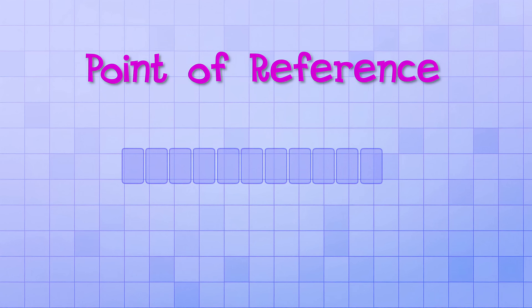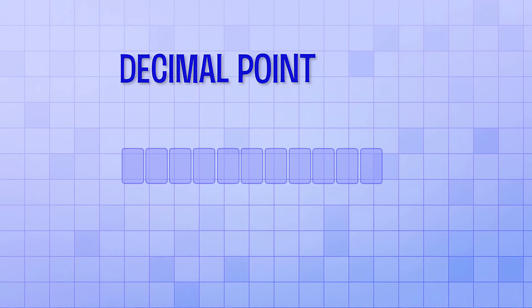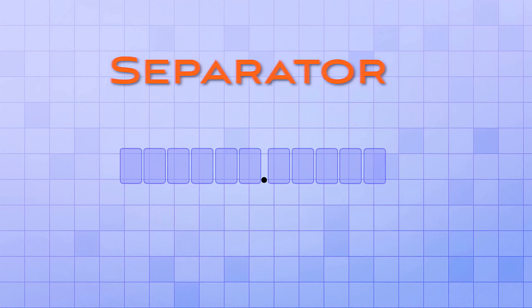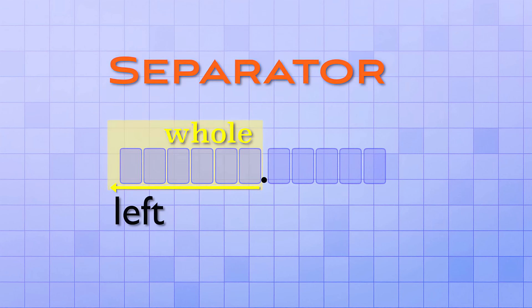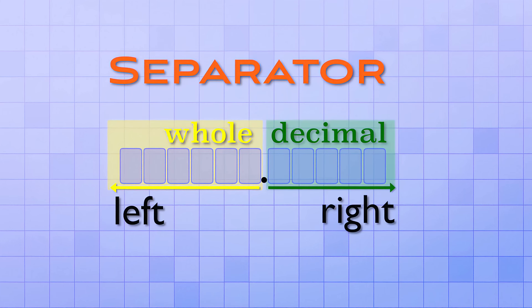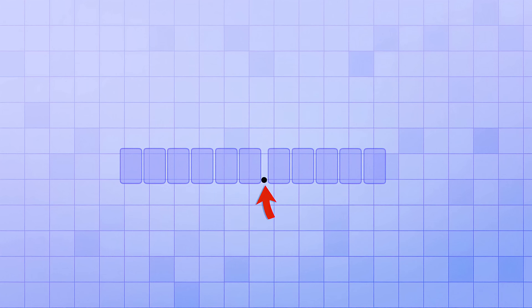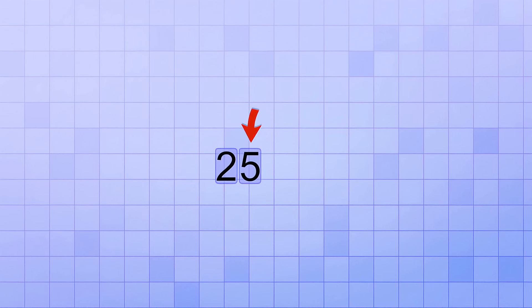What we need is a point of reference, a place that we always start from. And for that, we use a special symbol called the decimal point, which in the United States looks just like a period. Basically, the decimal point acts as a separator. It separates the number places that are used for counting whole values, which are on the left side of the decimal point, from the number places that are used to count fractional values, which are on the right side of the decimal point. And that's why you don't see a decimal point in every number. If there's no decimal digits in a number, like in the whole number 25, then you don't need to show the decimal point. It's safe to assume that the digit farthest to the right is in the ones place.